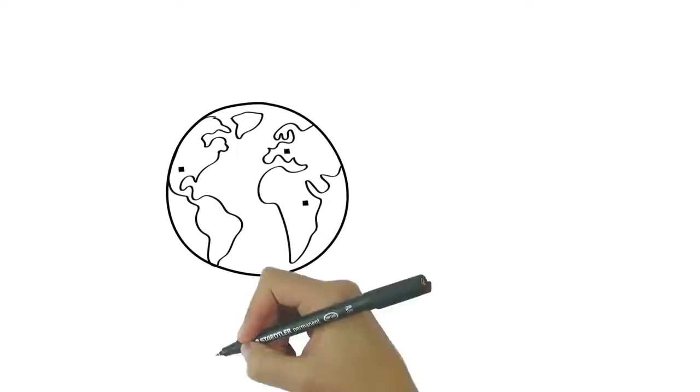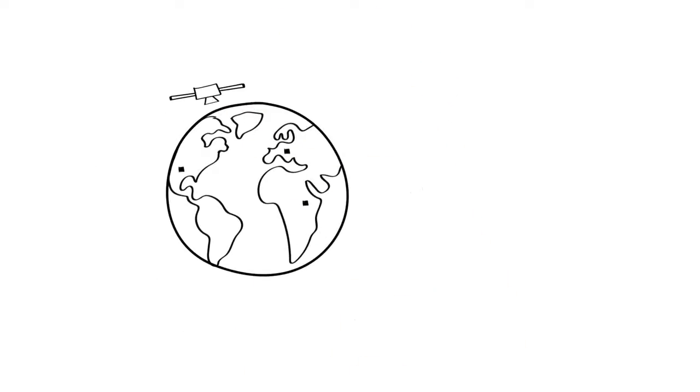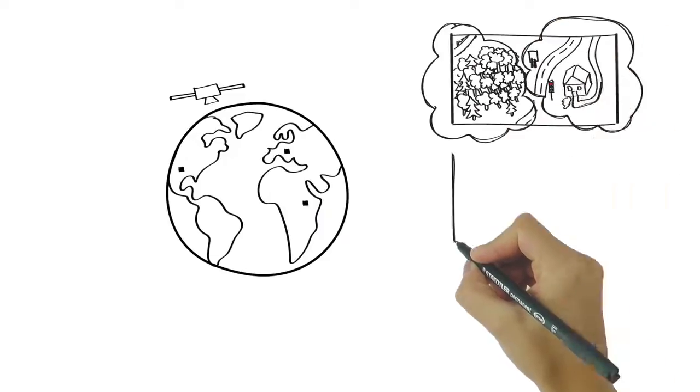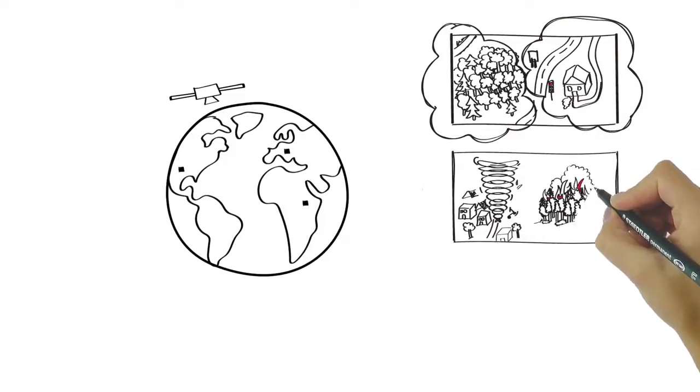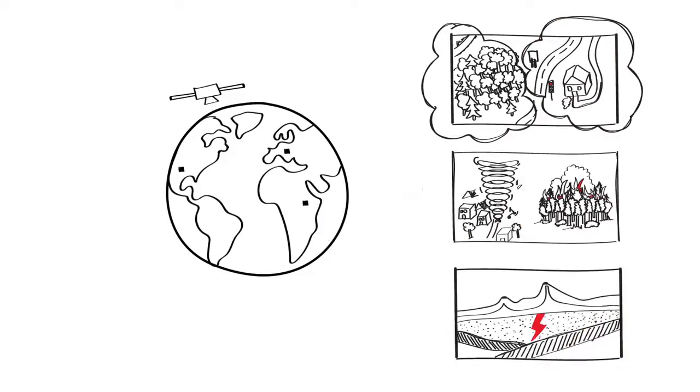Today, satellites are some of the most helpful observers on our planet. From orbit, they can see through the clouds, detect storms and fires, and even reveal the slightest movement in the Earth's crust, literally anywhere in the world.